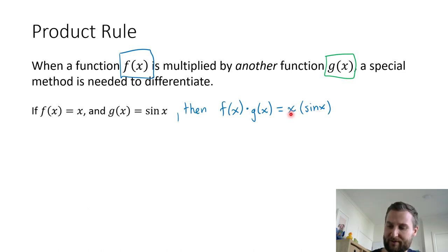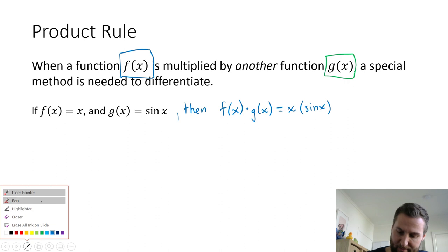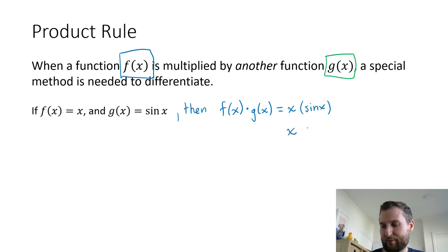But what about the combination of x times sin x? We can't use any sum or difference rule. The sum rule would be for something like x plus sin x, or the difference rule for x minus sin x. We cannot use those here because we are multiplying.